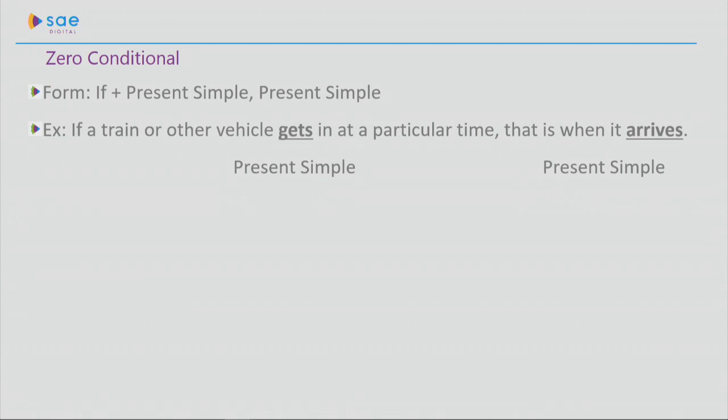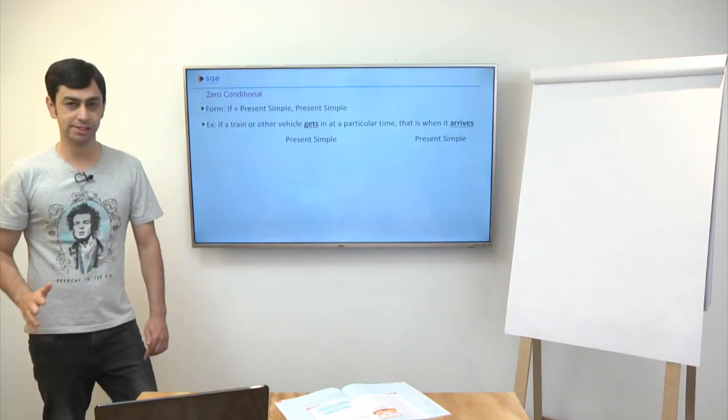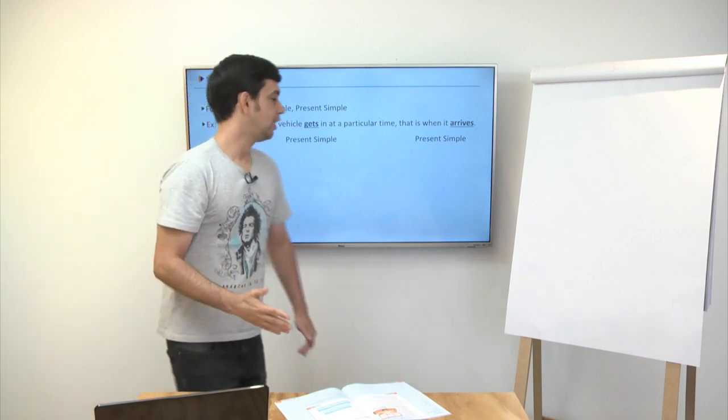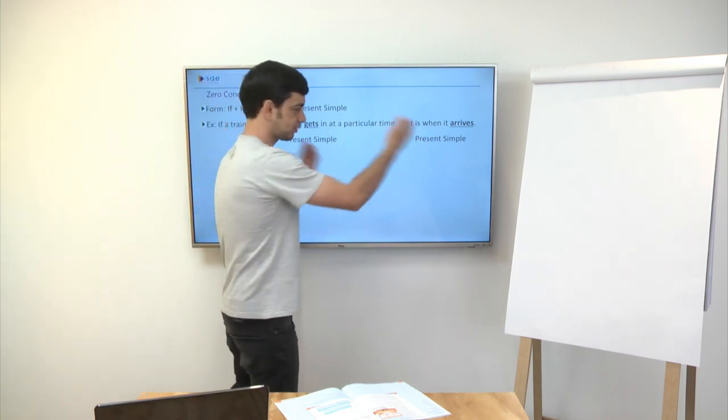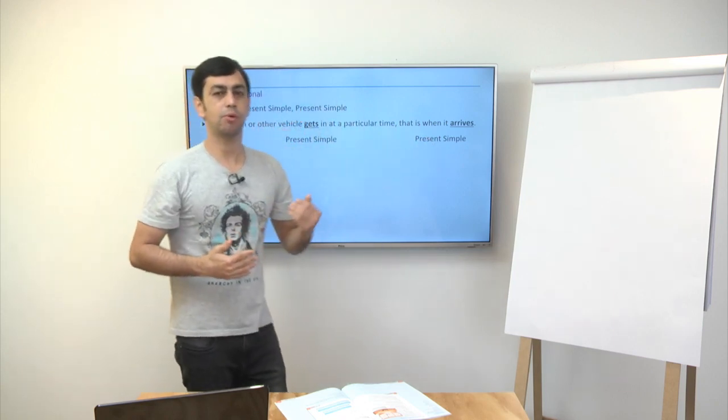That's the zero conditional. How do we form this structure? It will always appear as if, followed by a verb in present simple, then a comma and the complement also in present simple. For example, if a train or other vehicle gets in at a particular time, that is when it arrives. Again, the second verb here, after the comma, is also in present simple. So this structure is very easy. I will always have two verbs, two actions and both verbs will be in present simple.